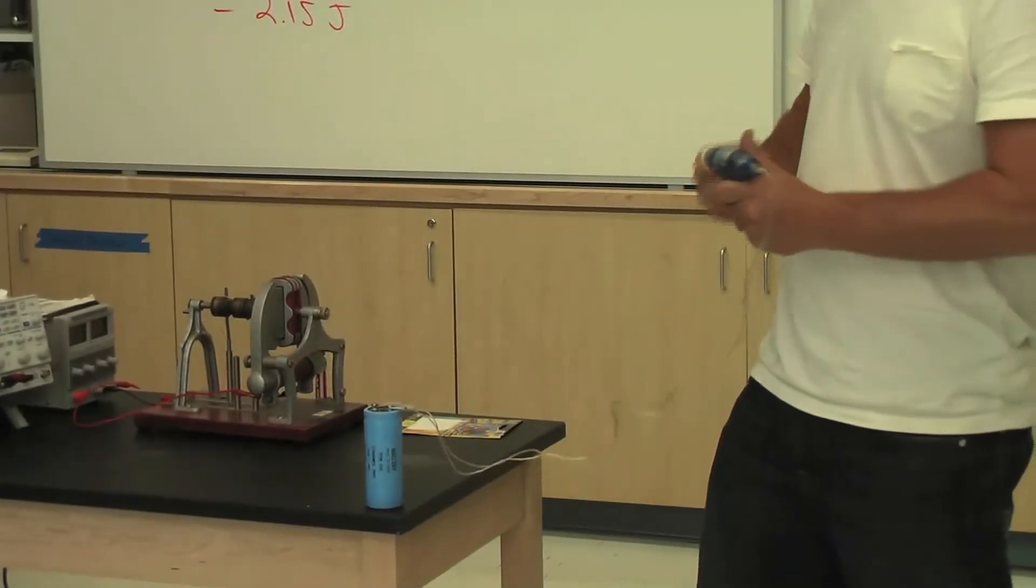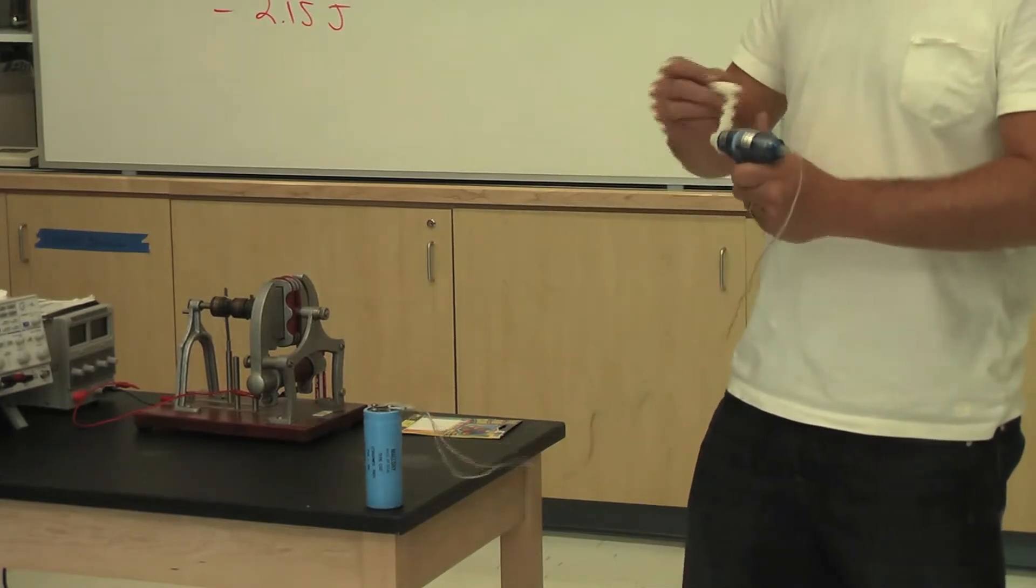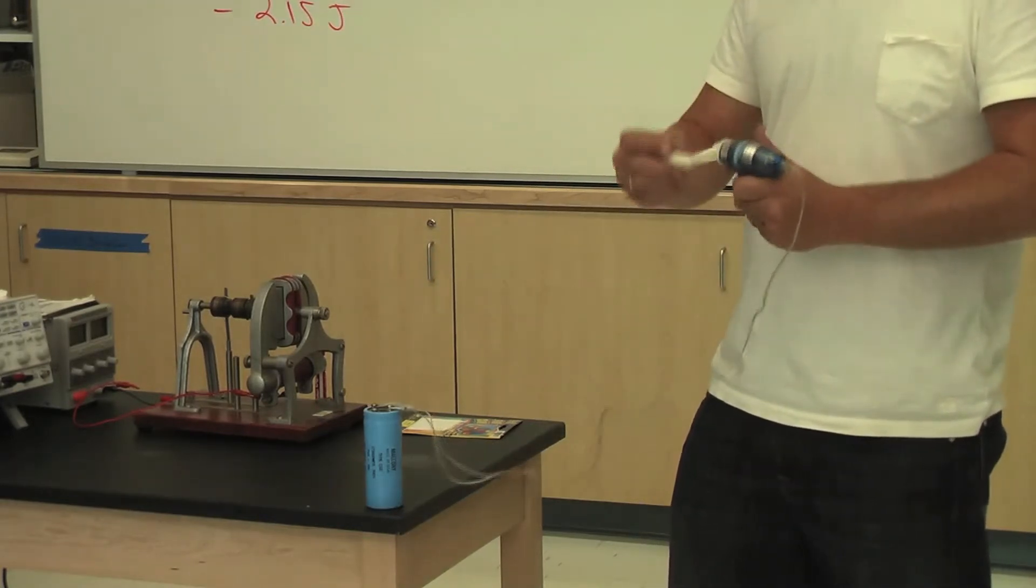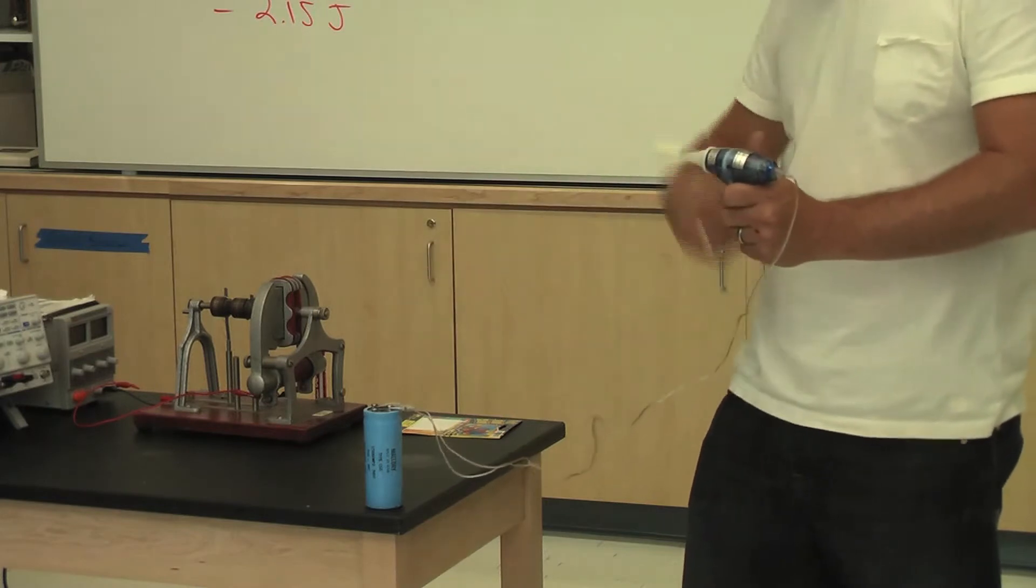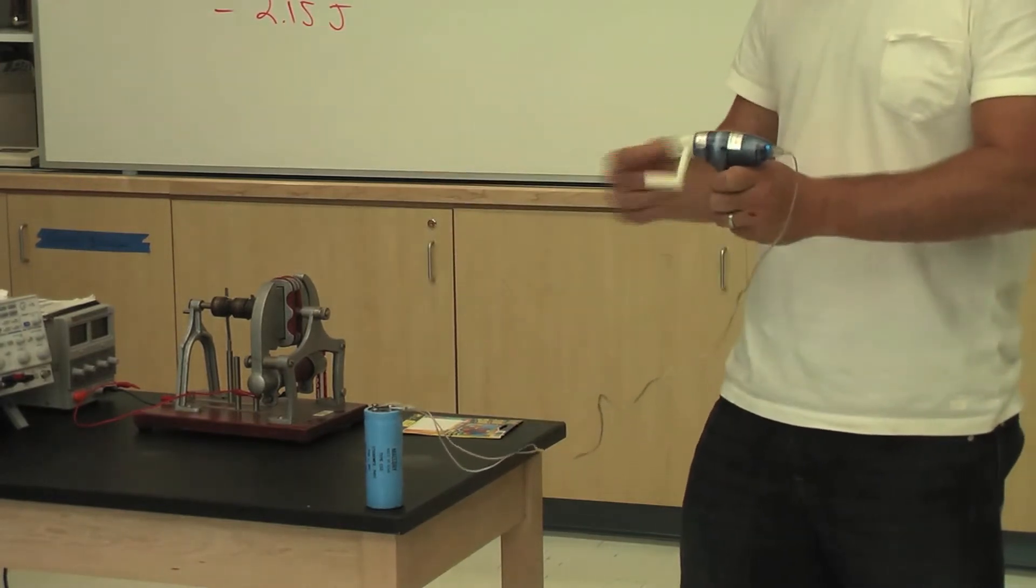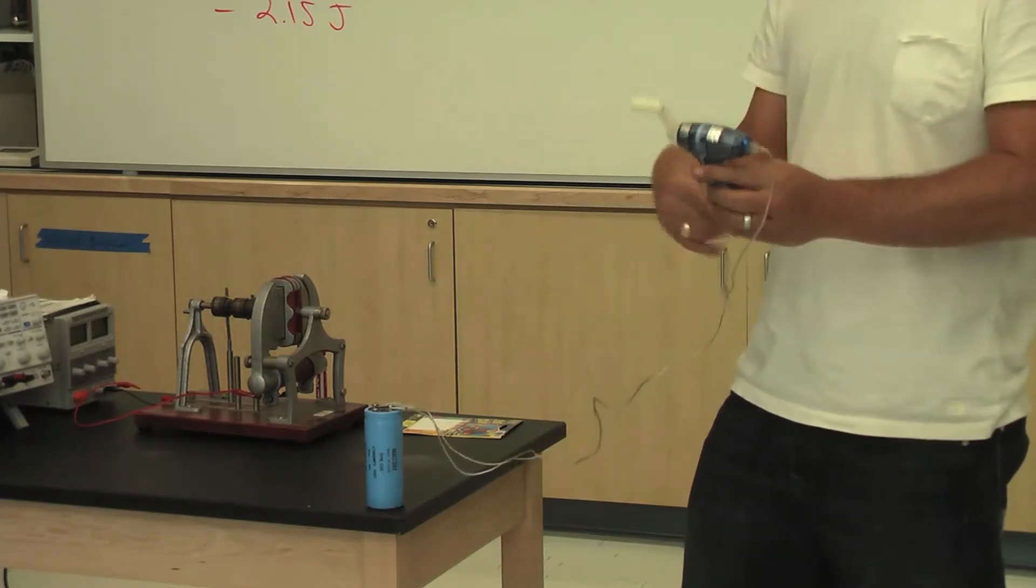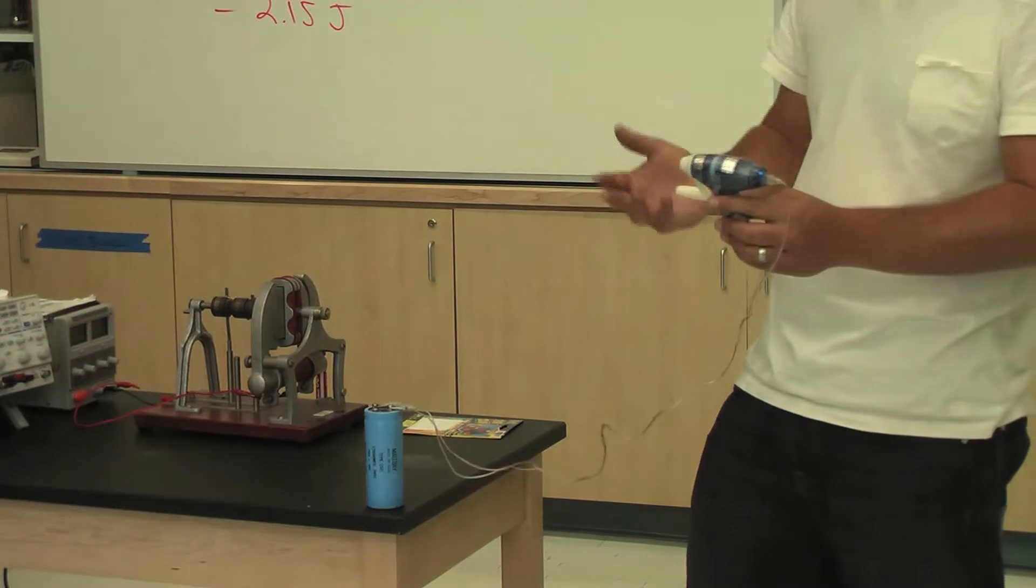That electricity then flows into the capacitor where it's stored as energy. When I release the handle, that is when I stop spinning it, then the capacitor releases the stored energy, electricity flows through these wires and into the generator, and now it acts as a motor. A motor is just a generator run in reverse.